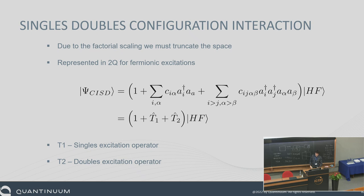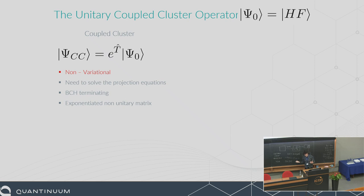This truncation is called CISD — singles and doubles — because having all possible excitations would be a gigantic matrix we can't fit on a computer, so we truncate to the single and double level to make it manageable. Coupled cluster takes this linear operator and exponentiates it, and by doing that, you get more of the wave function back for the same cost, because you get cross terms from the excitations in the exponential expansion. Coupled cluster gives you more bang for your buck when compared to the same T operator.